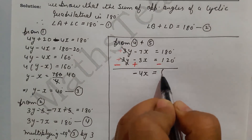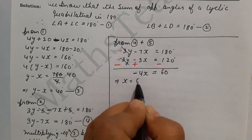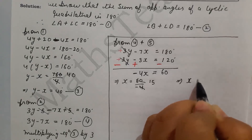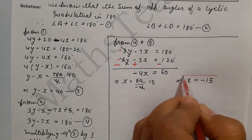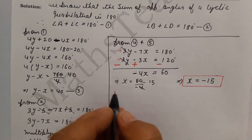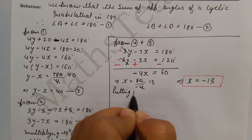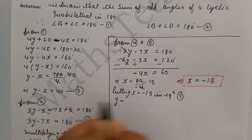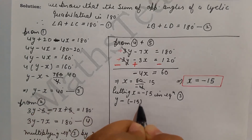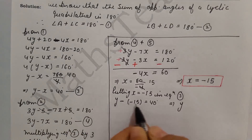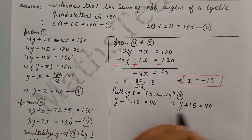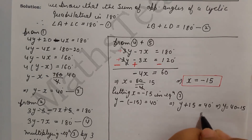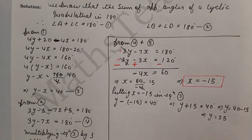This equals 180 minus 120, which is 60. So minus 4x equals 60, and dividing by minus 4: in the 4 times table, 60 comes at 15 times, so x equals minus 15. Now substituting x equals minus 15 into equation 3: y minus (minus 15) equals 40, which gives y plus 15 equals 40, so y equals 40 minus 15, therefore y equals 25.